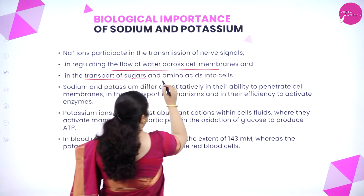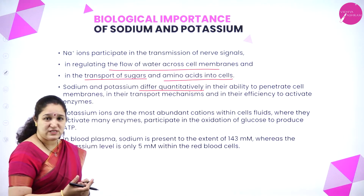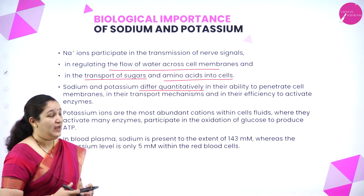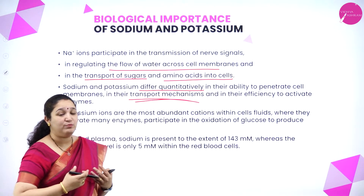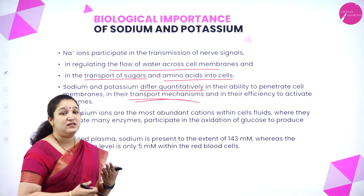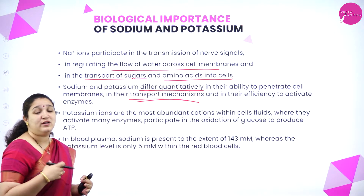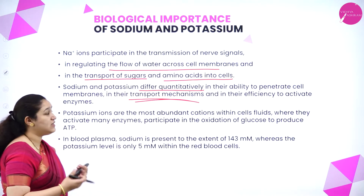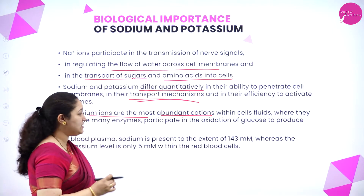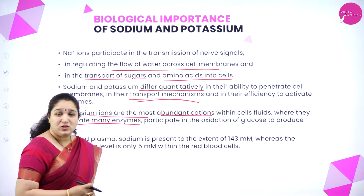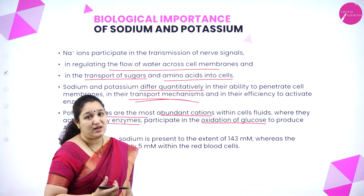Sodium ions are also responsible for regulating the flow of water across the cell membrane, and they transport sugar and amino acids into the cell. As they differ quantitatively, they penetrate into or out of the cell through a transport system called the sodium-potassium pump. The amount of sodium and potassium in the blood and cells makes a lot of difference in activating enzymes, the flow of water across membranes, and transport of sugar and amino acids into the cells. Sodium ions are the most abundant cations in cell fluids and activate many enzymes.